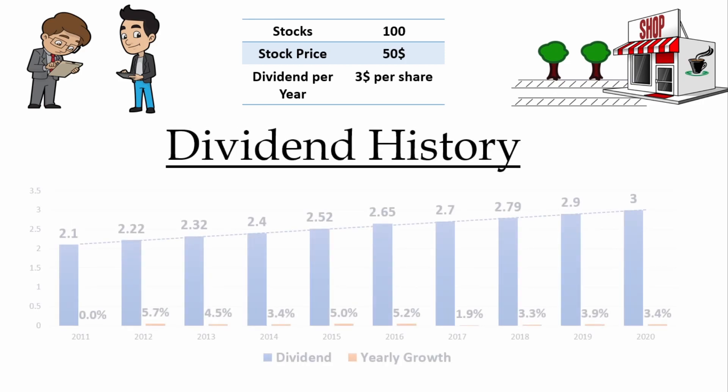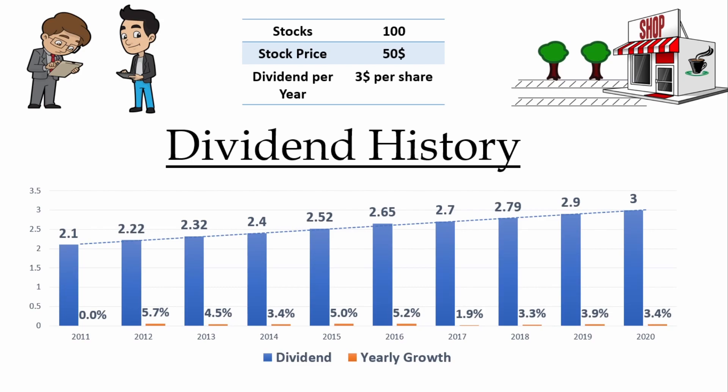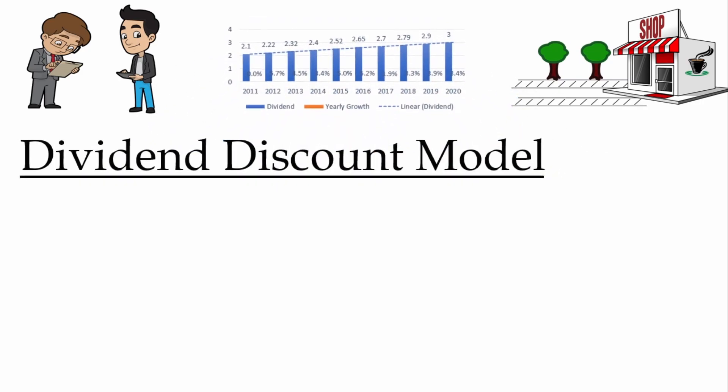Joe's dividend history suggests constant growth in dividend payments, and he has been growing his dividend in recent years at about 3.5–3.6%. So let's try the dividend discount model and try to value Joe's company.